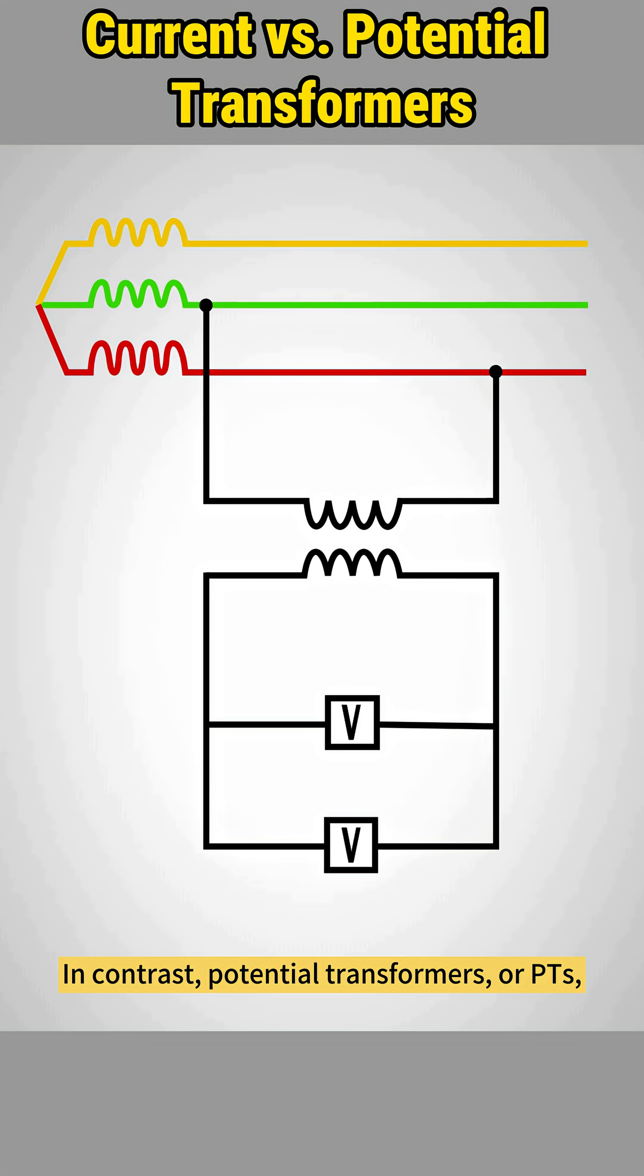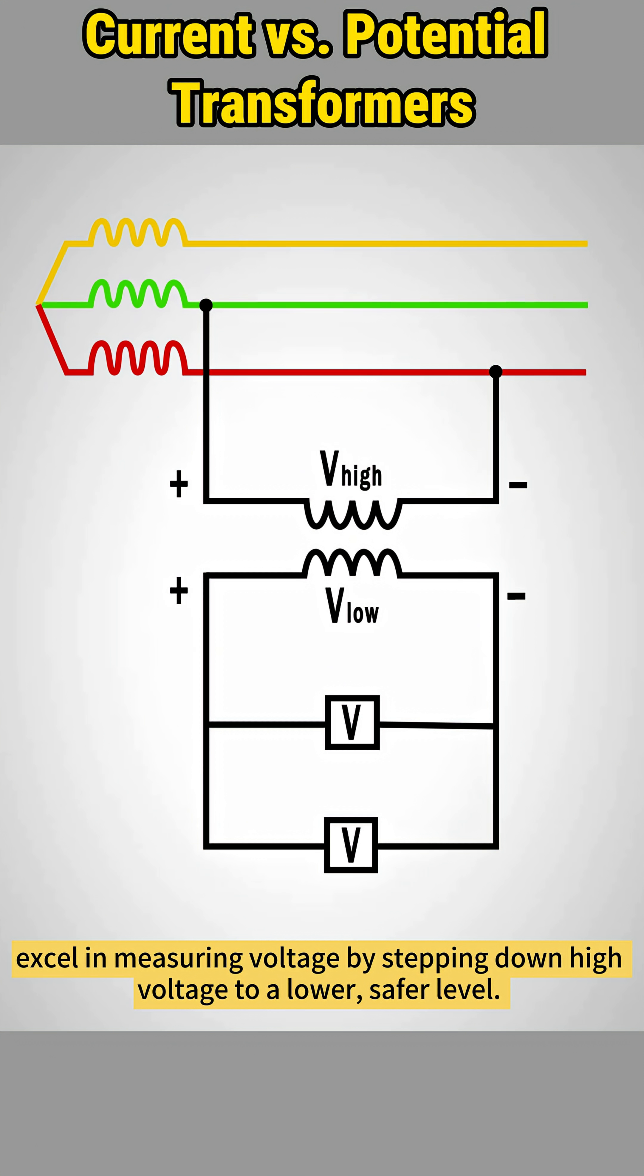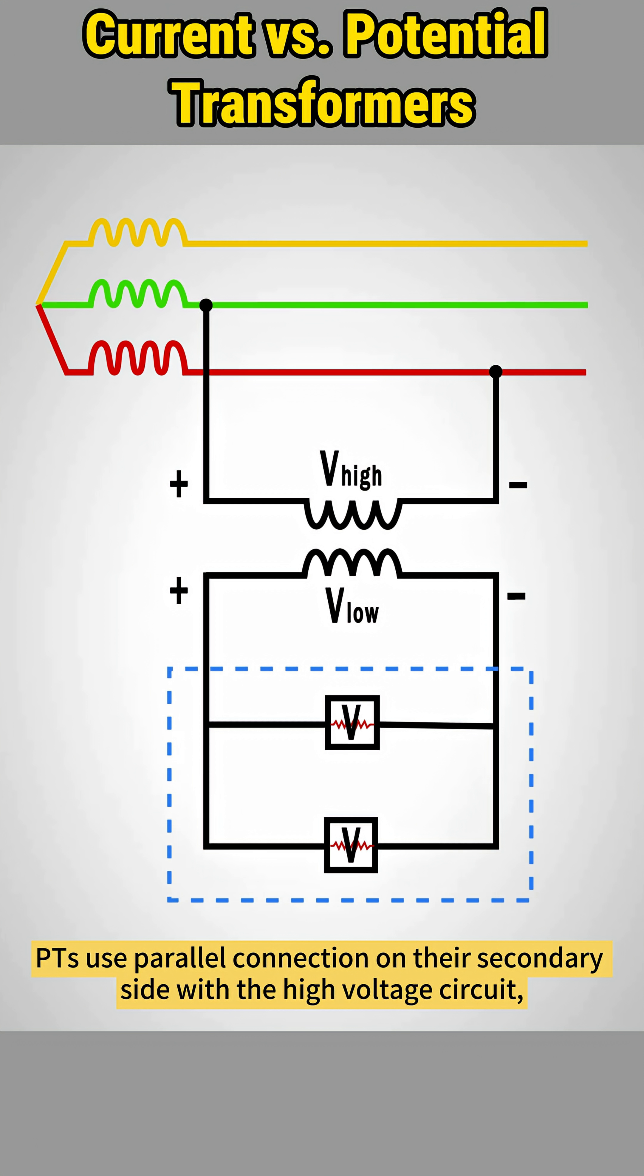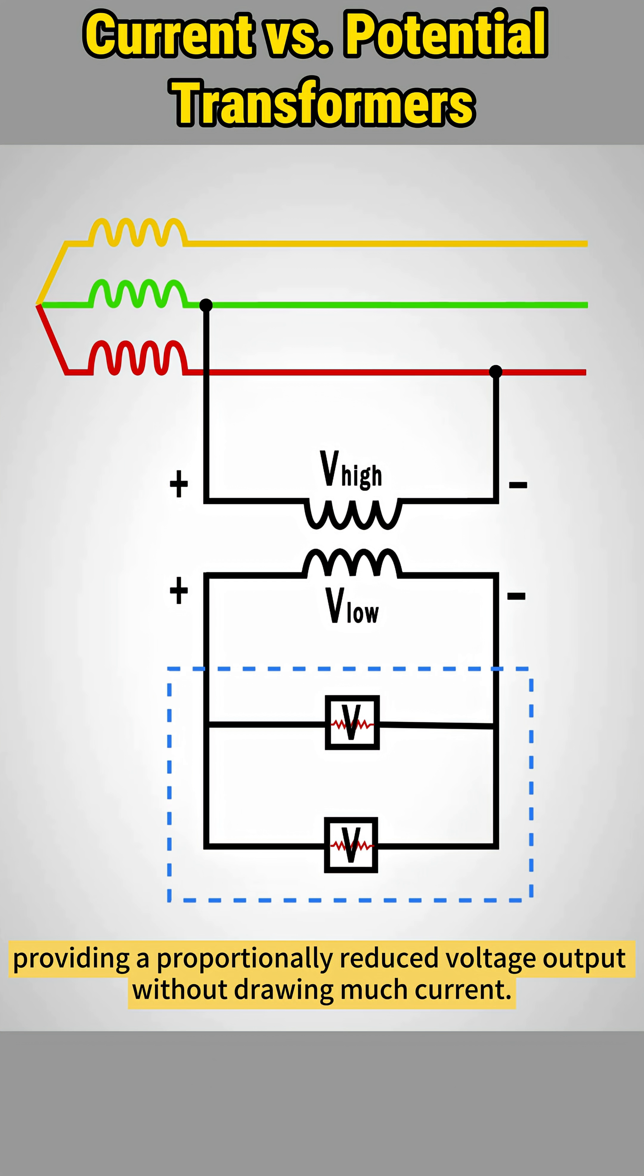In contrast, potential transformers, or PTs, excel in measuring voltage by stepping down high voltage to a lower, safer level. Unlike CTs, PTs have much higher coil resistance and low secondary current, operating like a no-load condition. PTs use parallel connection on their secondary side with the high-voltage circuit, providing a proportionally reduced voltage output without drawing much current.